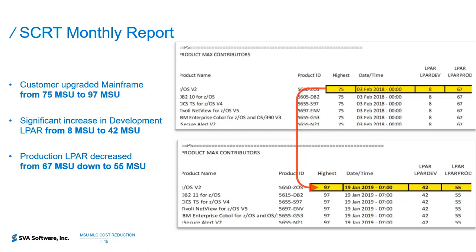They also noticed a lot of development work: the development ALPAR went from 8 MSUs up to 42 MSUs — significant development requirements not planned in their budget. Development did decrease from 67 down to 55 MSUs, but the customer was not prepared for this at all. This is where they reached out to us to help them reduce costs.